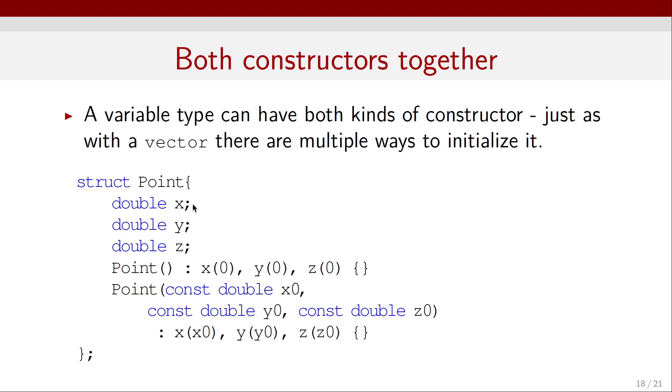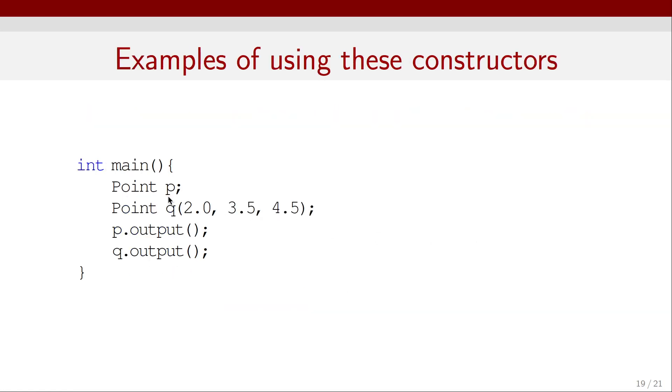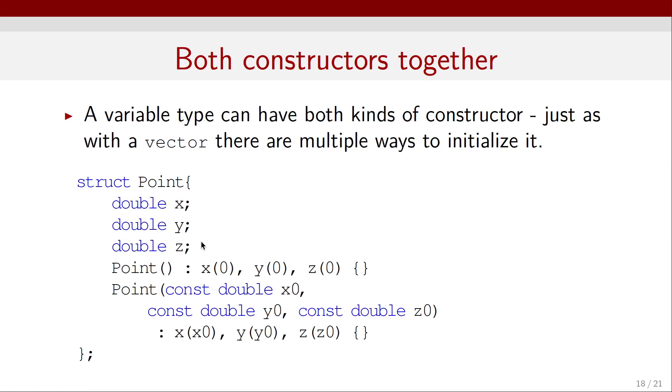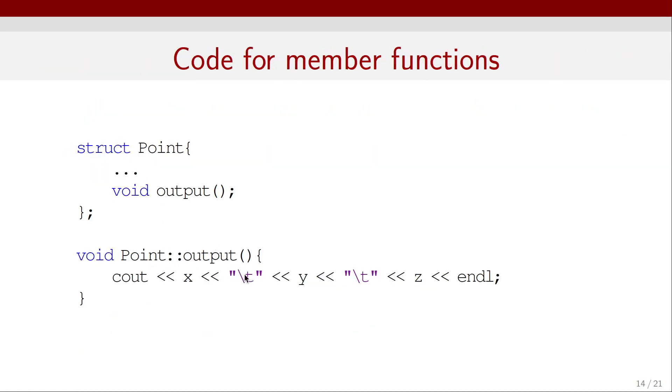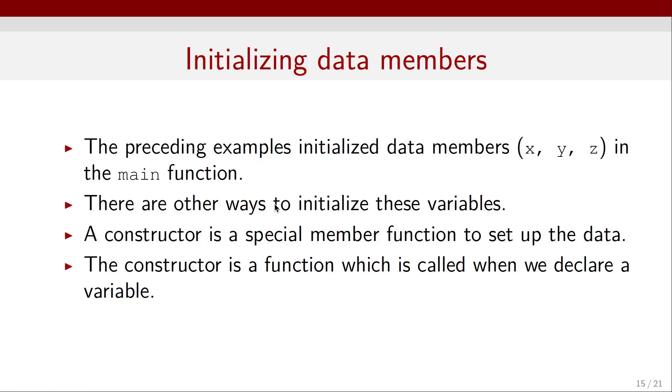So, here's what happens when we call that data type and declare an object of that type. We can declare a point P, for example, without any arguments, or we can declare a point Q and specify the arguments. And then we can call, remember, we have this output function that we declared earlier, this one right here. So, if we keep this piece of code, then we can use P.output to print the components of the point on the screen.